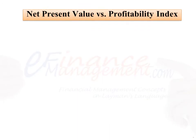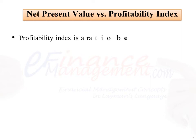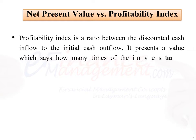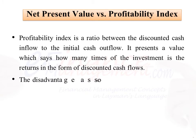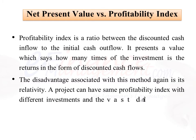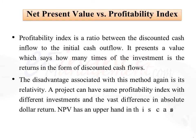Net present value versus profitability index. Profitability index is a ratio between the discounted cash inflow to the initial cash outflow. It presents a value showing how many times the investment is returned in the form of discounted cash flows. The disadvantage associated with this method again is its relativity — a project can have the same profitability index with different investment sizes and a vast difference in absolute dollar return. NPV has an upper hand in this case.